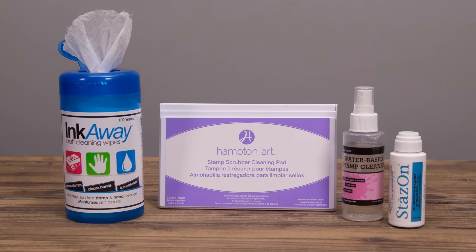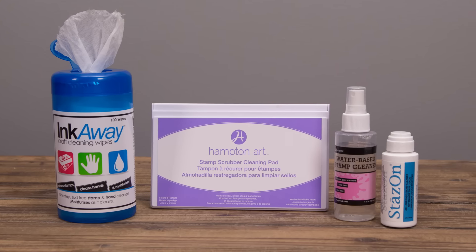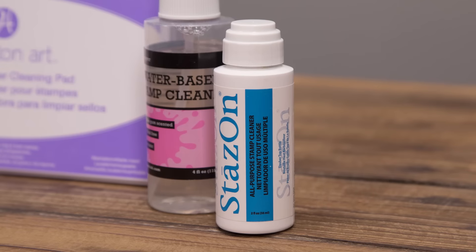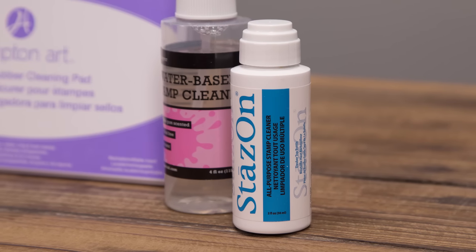After all the stamping is done, you'll want to clean and store your stamps to keep them working for years to come. You'll find several types of stamp cleaners at Hobby Lobby, including scrubby pads and wipes. If you use Stazon Ink, be sure to get Stazon Ink Cleaner as well.